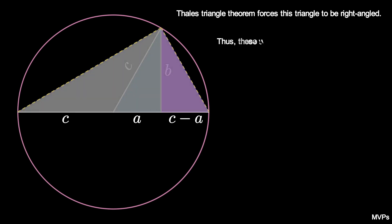Consequently, these two triangles sharing an edge of length B are similar. This implies that (C + A)/B is equal to B/(C - A).